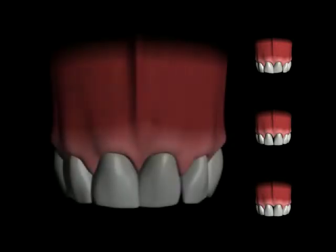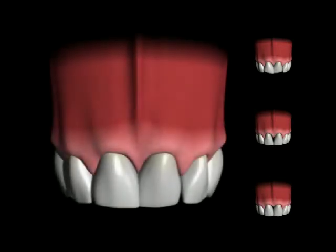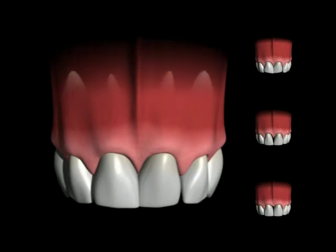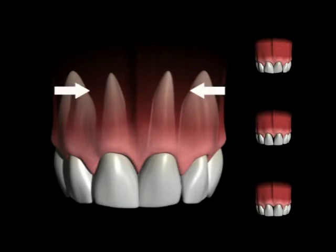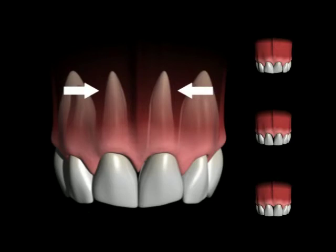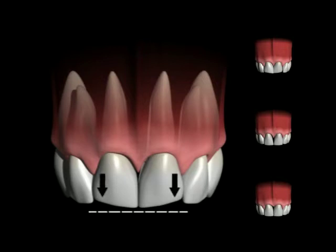To close the interproximal space, we are generally concerned with three possible approaches. The first method is orthodontic root approximation to close or pinch down the tissue space. Proper root alignment causes space closure and a pinching down of the interdental tissue. Incisal edge wear will become more obvious, necessitating restoration.